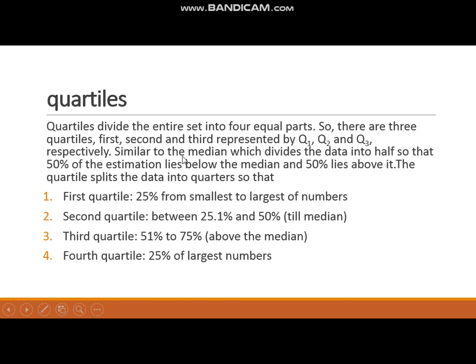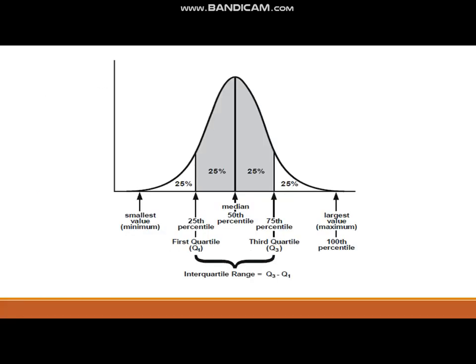Quartiles. Quartiles divide our data into 4 equal parts, and we have 3 quartiles: first quartile, second quartile and third quartile — that is Q1, Q2 and Q3. The first part has 25% of the data from smallest to largest, the second and third parts each have 25% in the middle range, and the fourth part has the largest 25%. Q2 is the median, which is the middle of the data. Q1, Q2 and Q3 divide our data into 4 equal parts of 25% each.